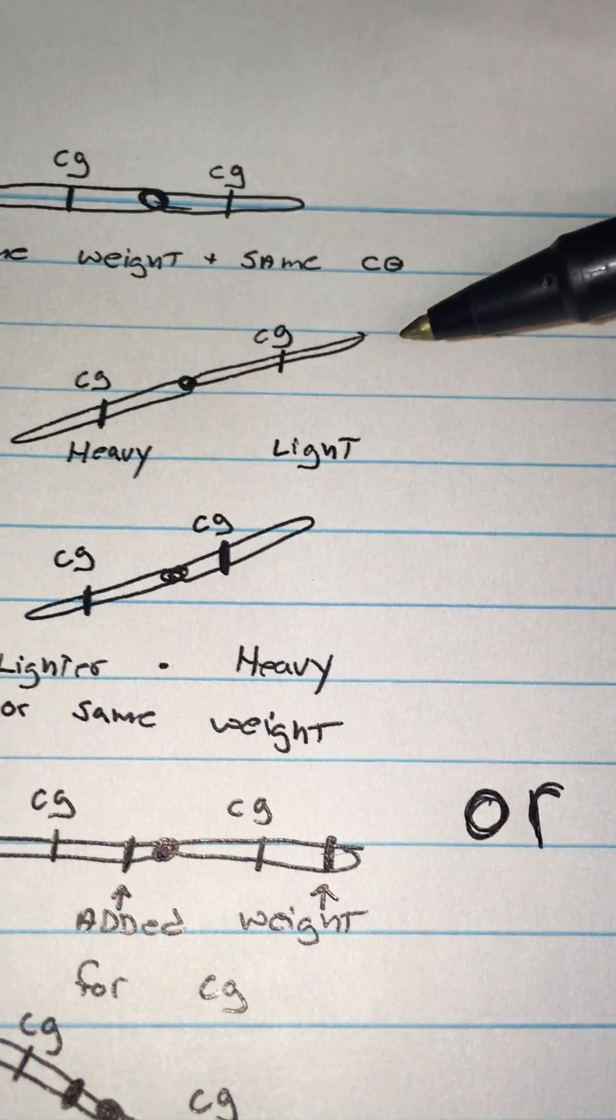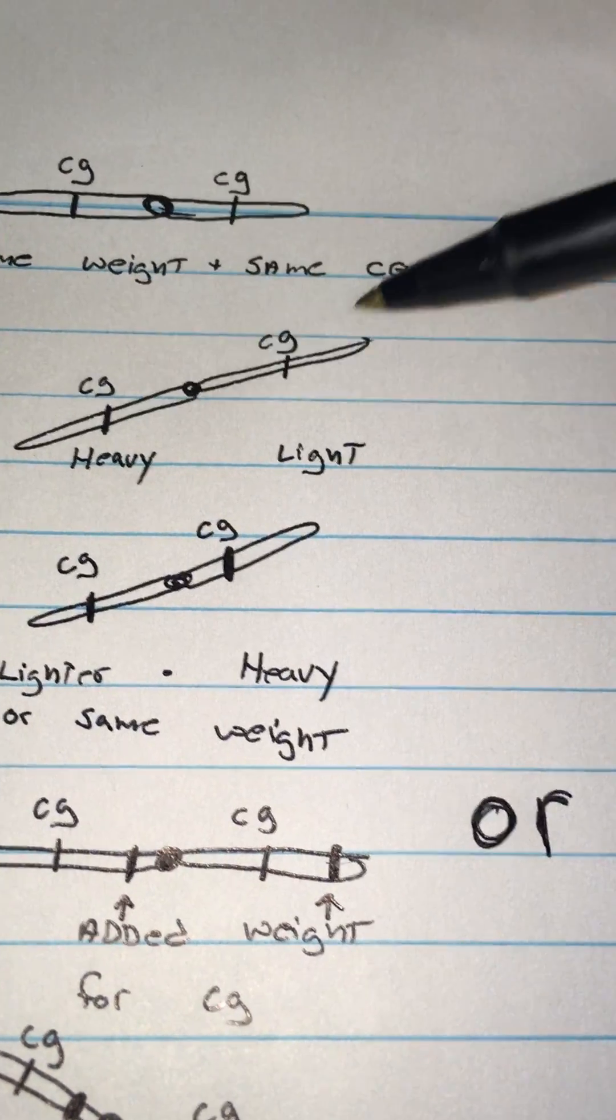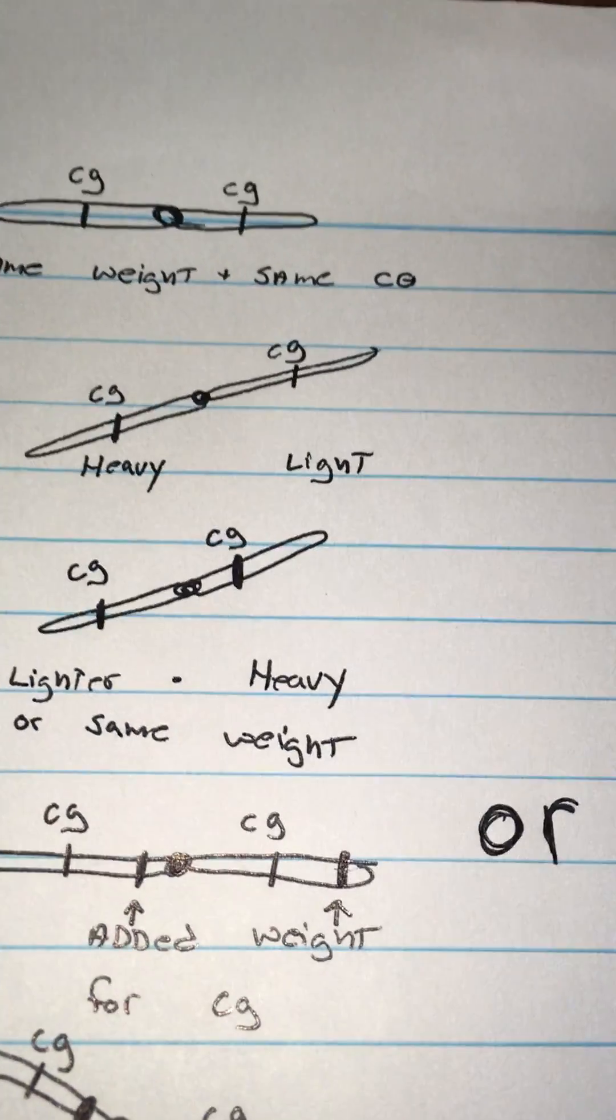Now if this blade is heavier and this blade is lighter and the center of gravity is equal, obviously the heavy blade drops.